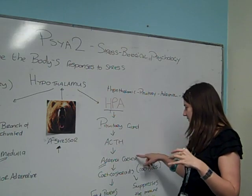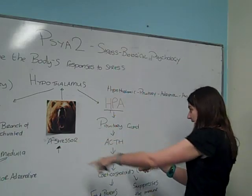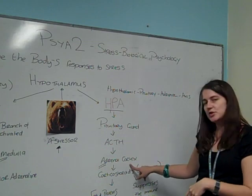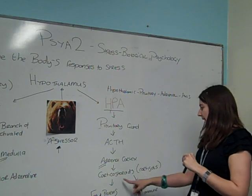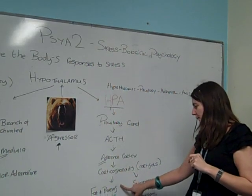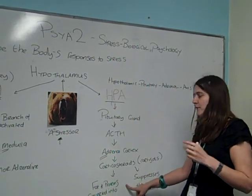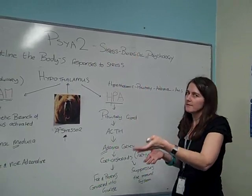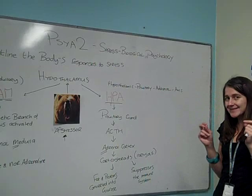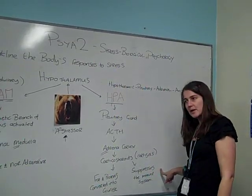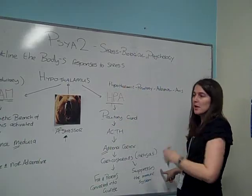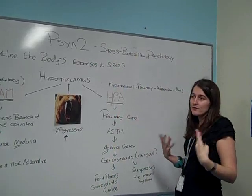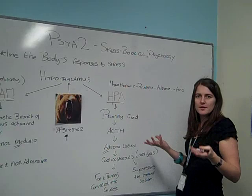Your adrenal cortex is at the top of your kidneys in your adrenal glands. The adrenal cortex produces corticosteroids — cortisol. This causes fats and proteins to be turned into glucose, and you need that glucose for energy to deal with long-term stress, such as having a month of exams ahead of you. Unfortunately, at the same time, cortisol suppresses your immune system — which is the next topic you'll cover. If your immune system is suppressed and weakened, you're more likely to get ill, which is why highly stressed people often get lots of colds and illness.